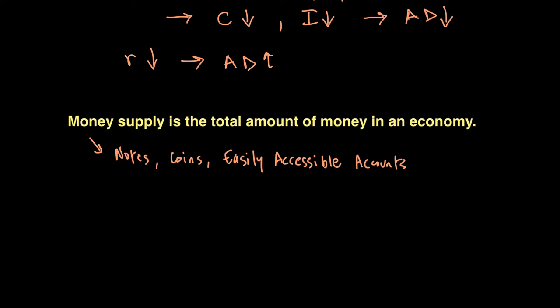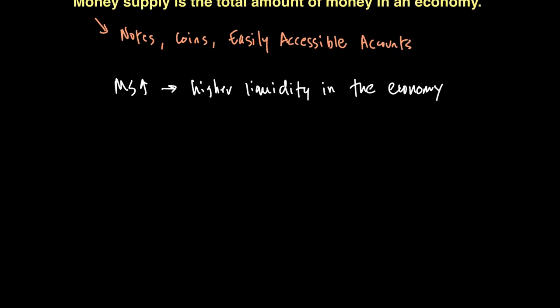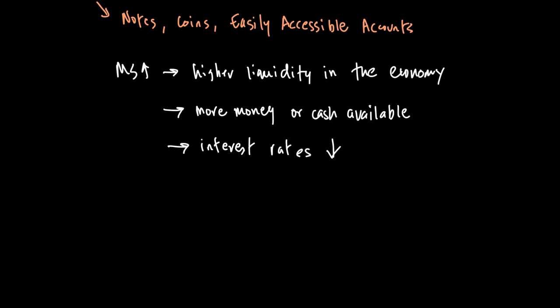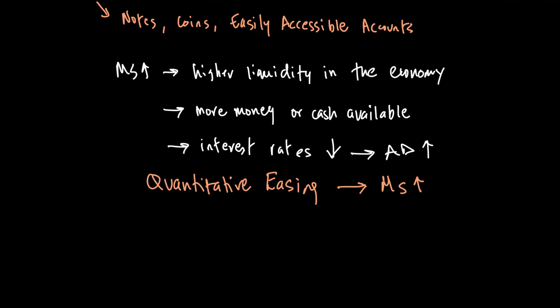Still, money supply is a tool of managing aggregate demand. When money supply goes up, there is higher liquidity in the economy. This higher liquidity means more money is being printed and therefore more cash is suddenly available. This higher cash available means interest rates will go down because people no longer need to borrow as much as before, and when money is available for people to spend, AD goes up. The rise in money supply is also called quantitative easing.